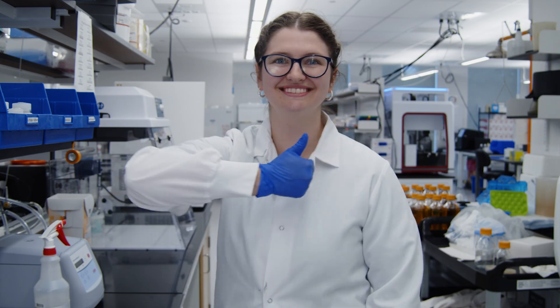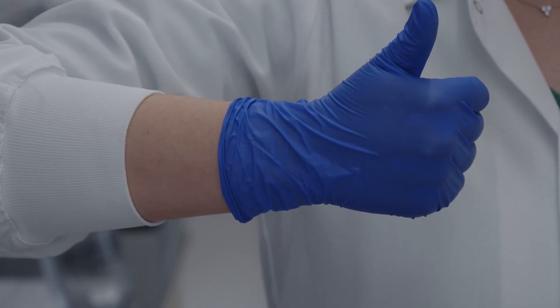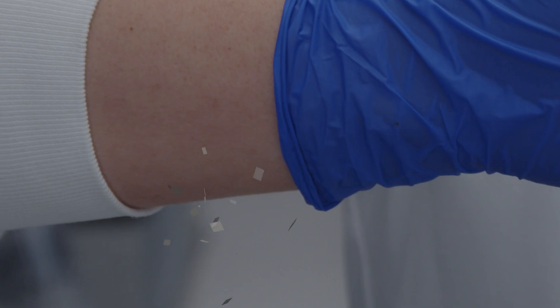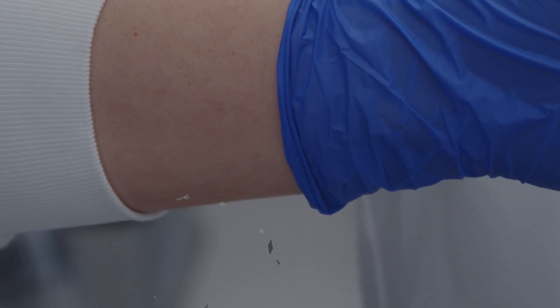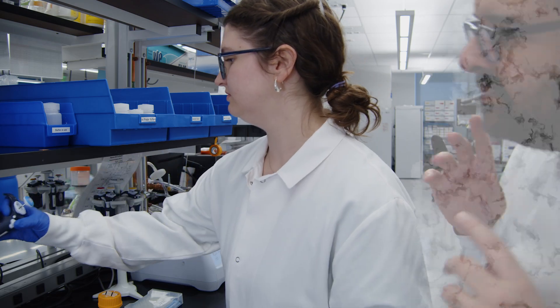Once you're gloved and gowned, check for exposed skin on your wrist or lower arm. You could be shedding skin cells or other debris into your sample accidentally. Some people are just more shed-y than others.